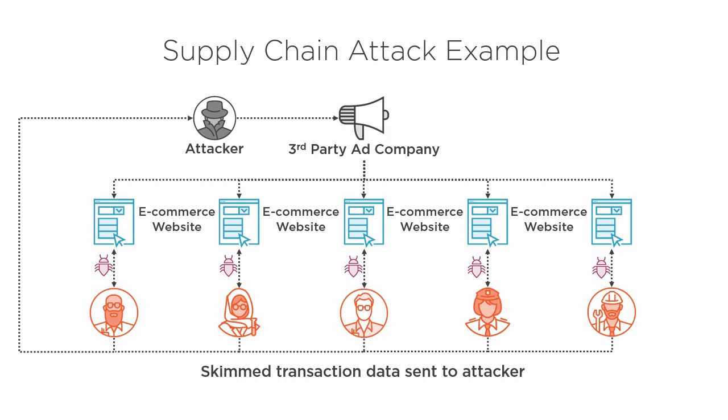Personal details, credit card information — all that. The e-commerce website itself may have been secure, but the third-party ad company, which is part of the supply chain in this example, was the weak link in the chain. The attacker was able to compromise them and hit four or five different stores at once with the same code, skimming all those transactions from all those customers and sending it back to his command center.